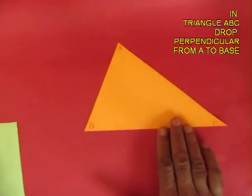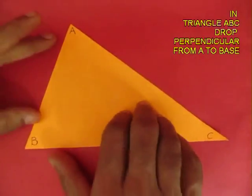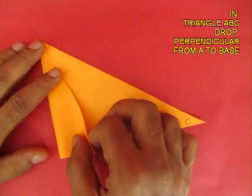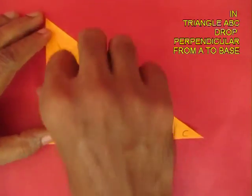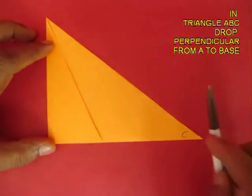Now cut a triangle and mark the internal angles A, B, and C. Then drop a perpendicular from point A to the base BC.